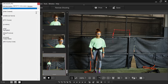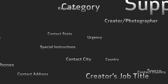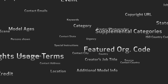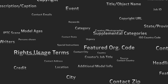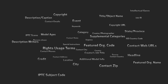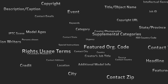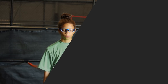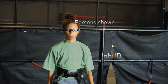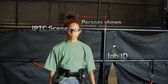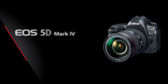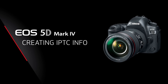What can IPTC display? There are 39 possible fields of info, ranging from detailed photographer contact info and subject or event details, to captioning and copyright usage terms. Broad keywords can be entered and attached to each image you take.